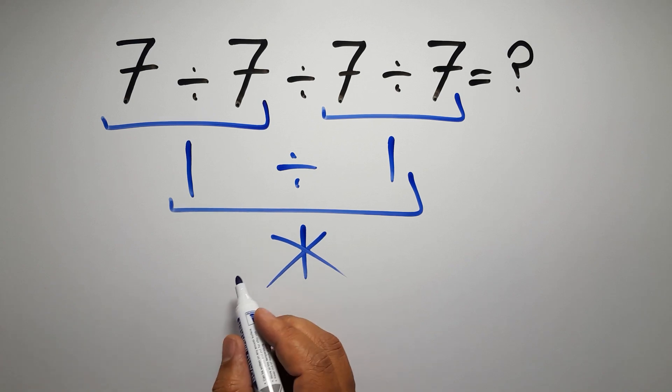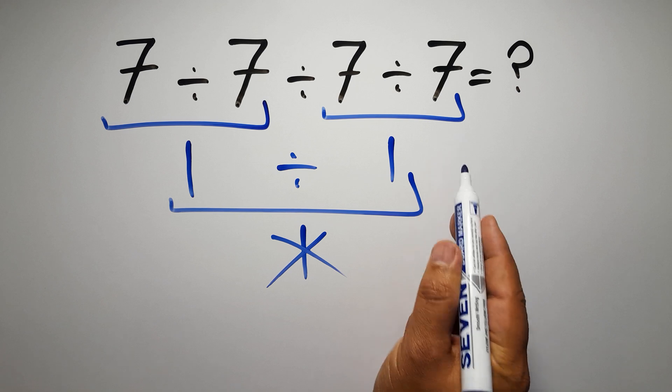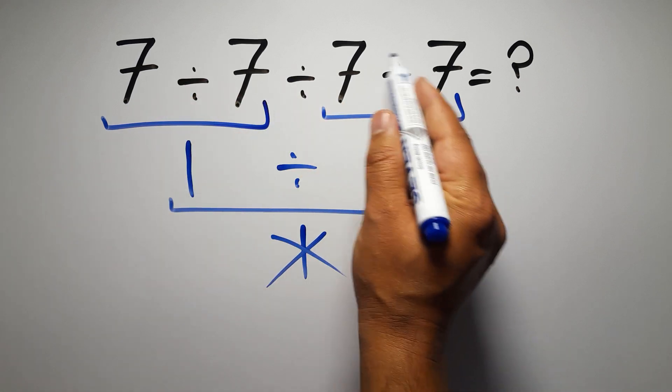Because according to the rule of operations, when we have more than one division in an expression, we have to work from left to right. So here, first we have to do this division, then this division, and finally this division.